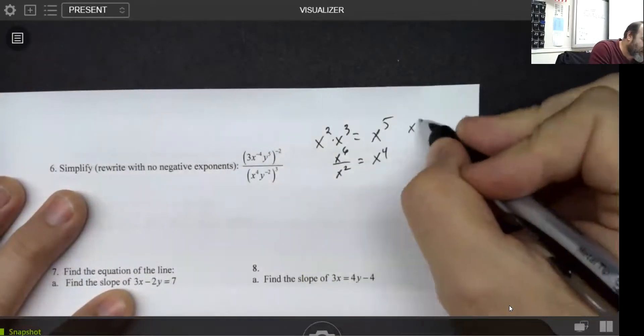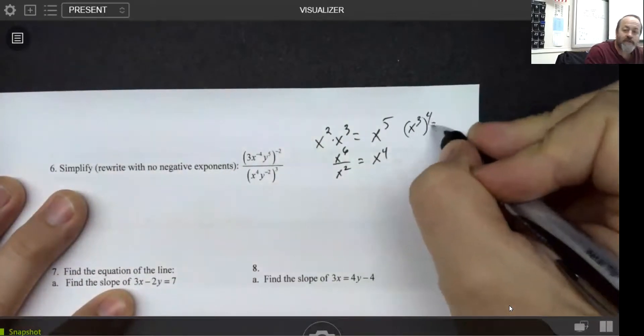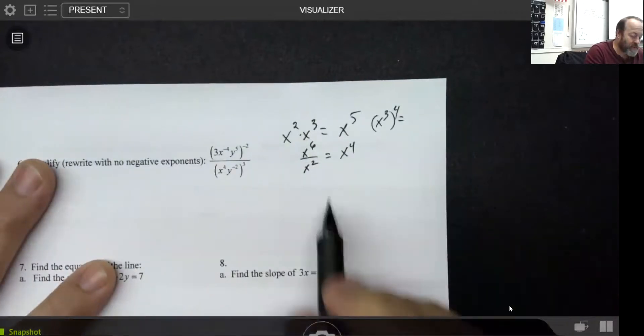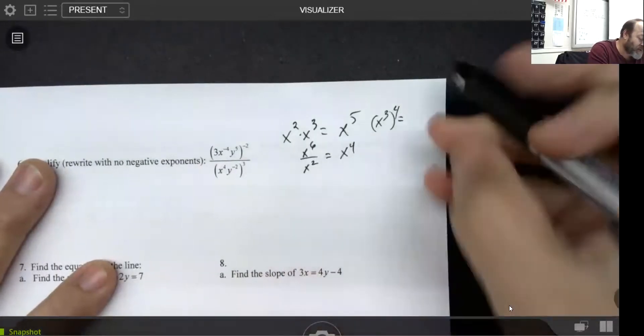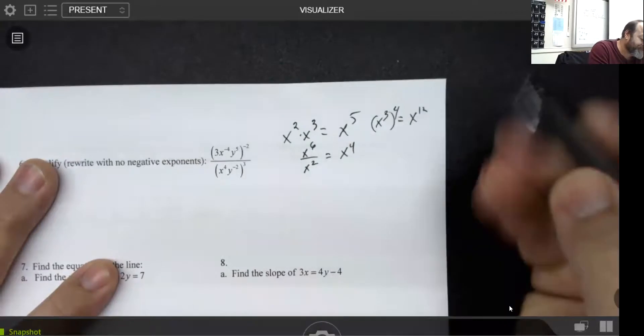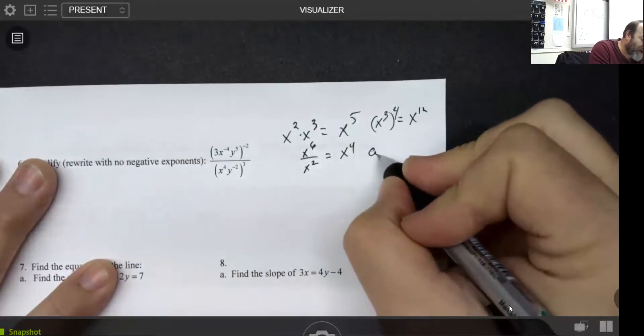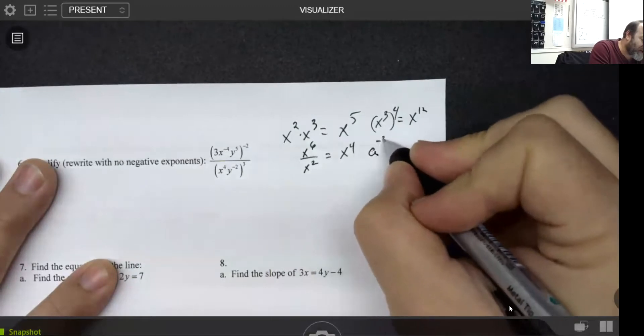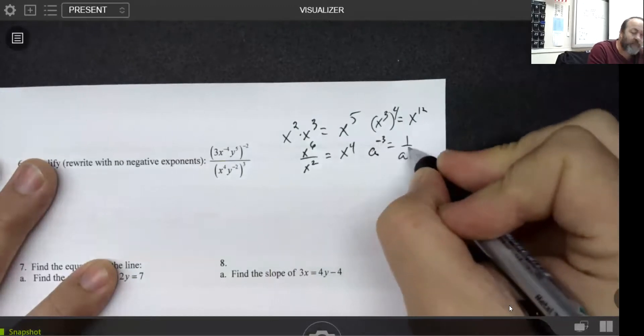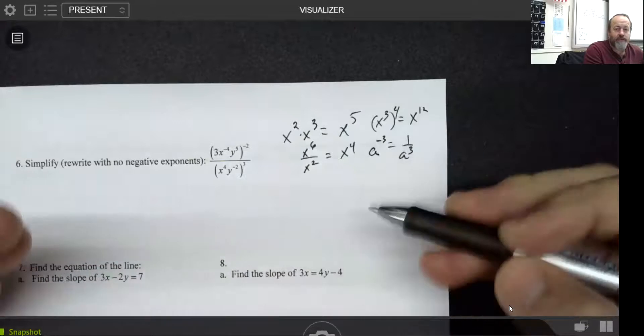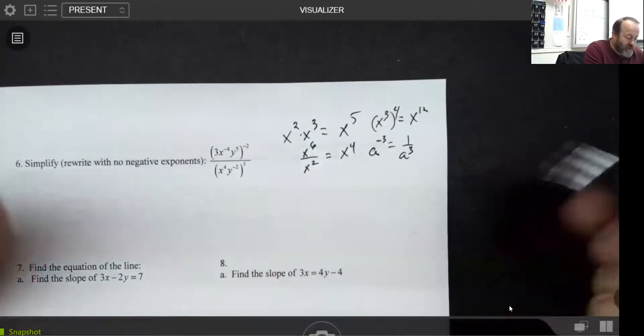Another fact is that x to the third raised to the fourth is not x to the seventh—sometimes people get these two rules mixed up—it's x to the twelfth. And finally, any time you have an exponent that is negative, that makes it a reciprocal. So that's kind of our little set of rules that govern those things.